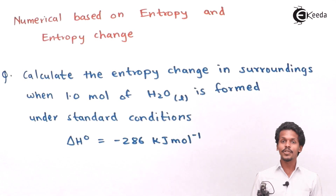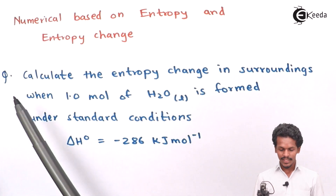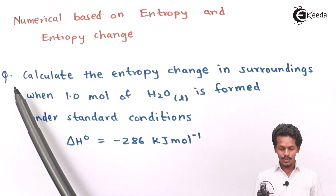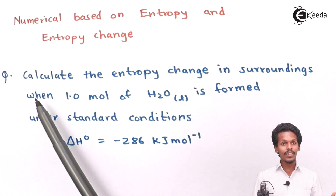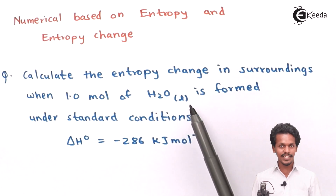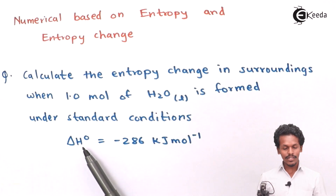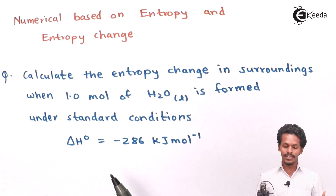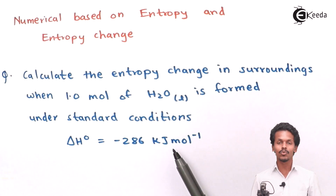This numerical is based on entropy change, so let us observe the question. We have to calculate the entropy change in the surroundings when one mole of H₂O in liquid form is formed under standard conditions, and the ΔH⁰ of the reaction is given as minus 286 kJ per mole.